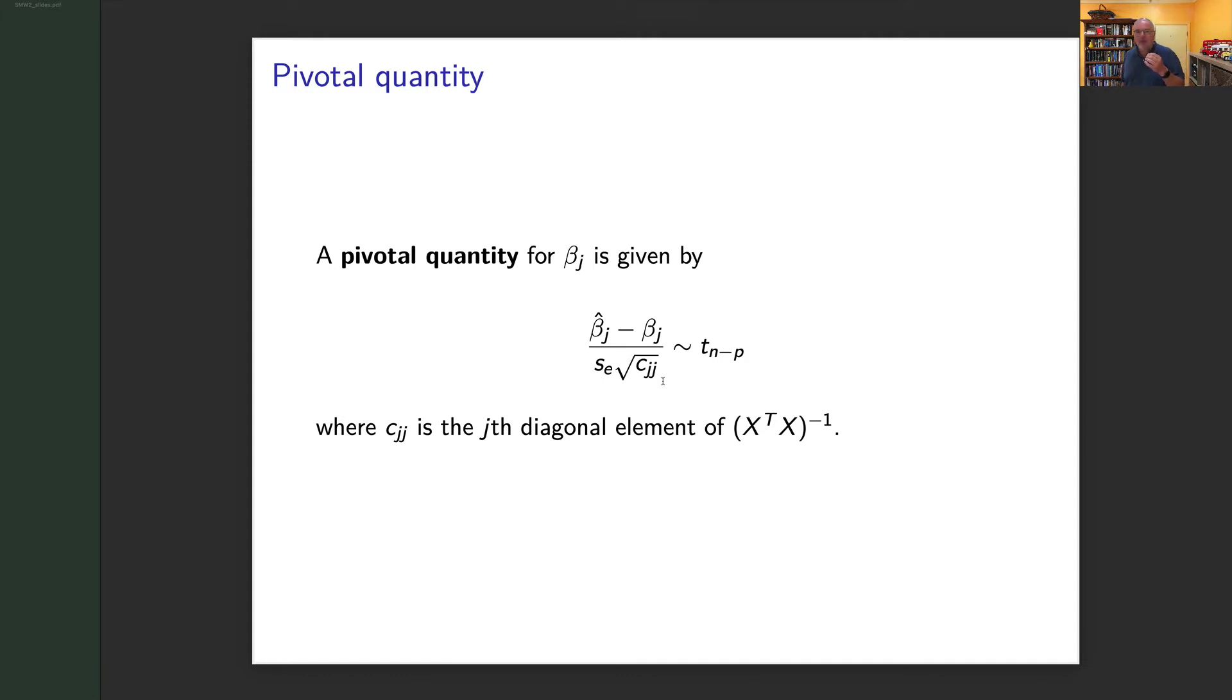If you don't remember pivotal quantities, go back to stats modern inference. But what this means is I can do inference. I can basically say if I take the estimate β̂_j of the coefficient β_j, take off β_j, divide it by the standard error of this estimate.